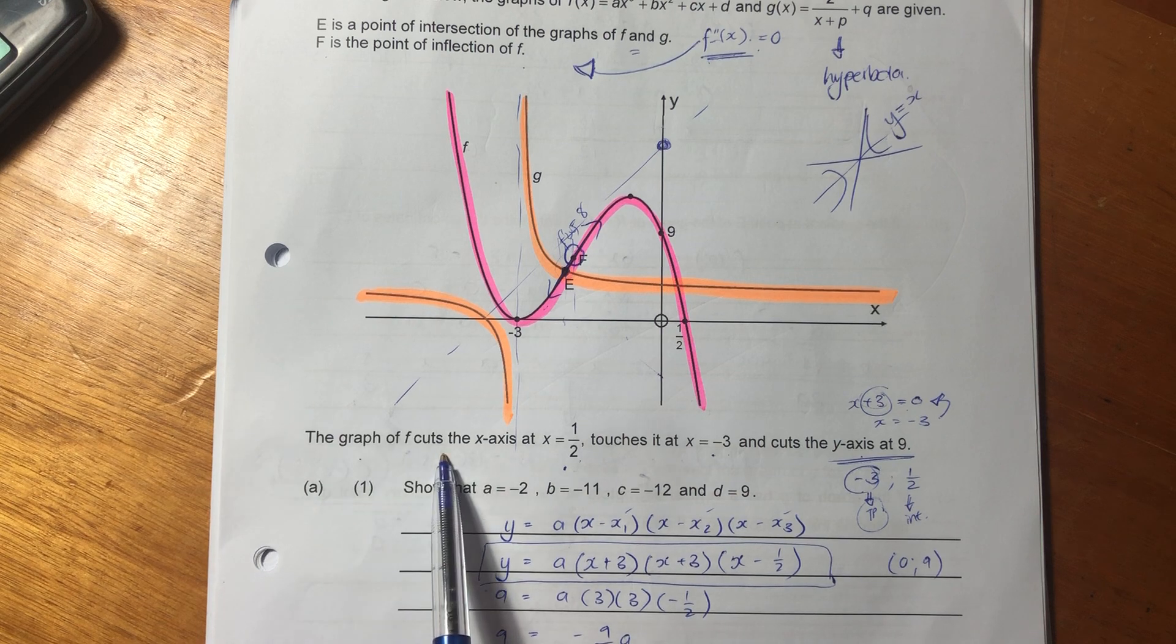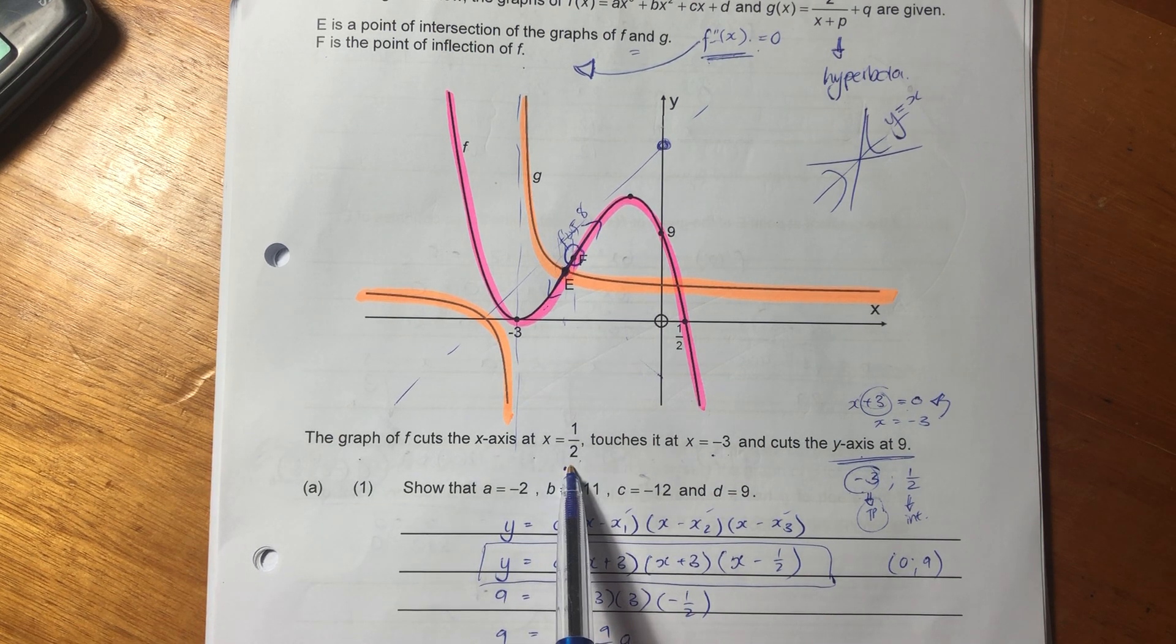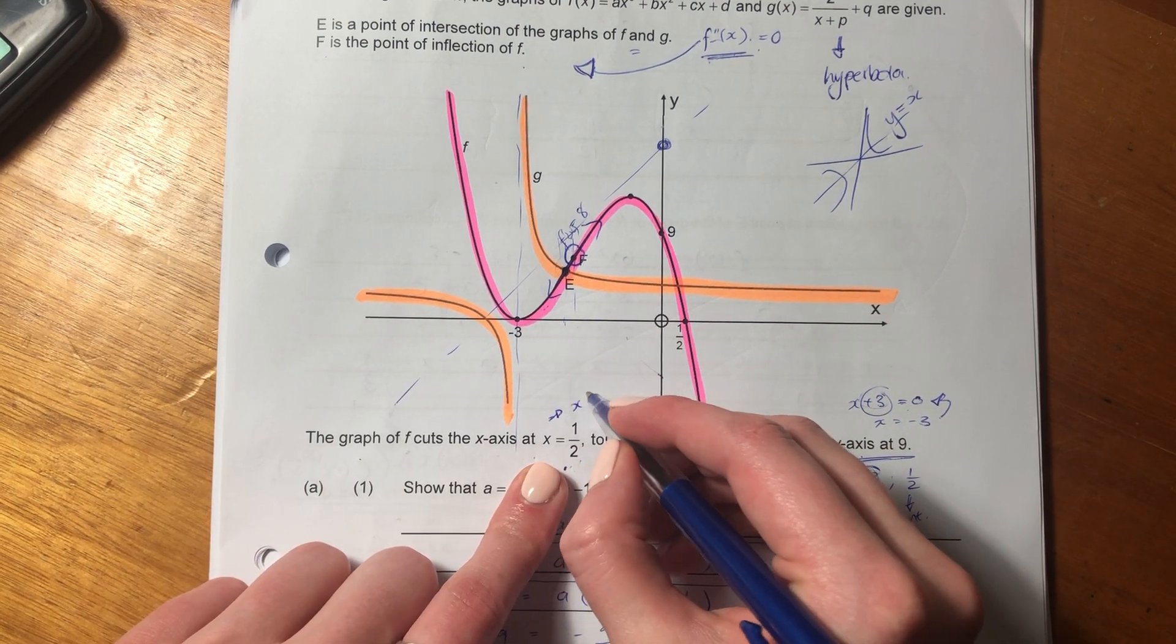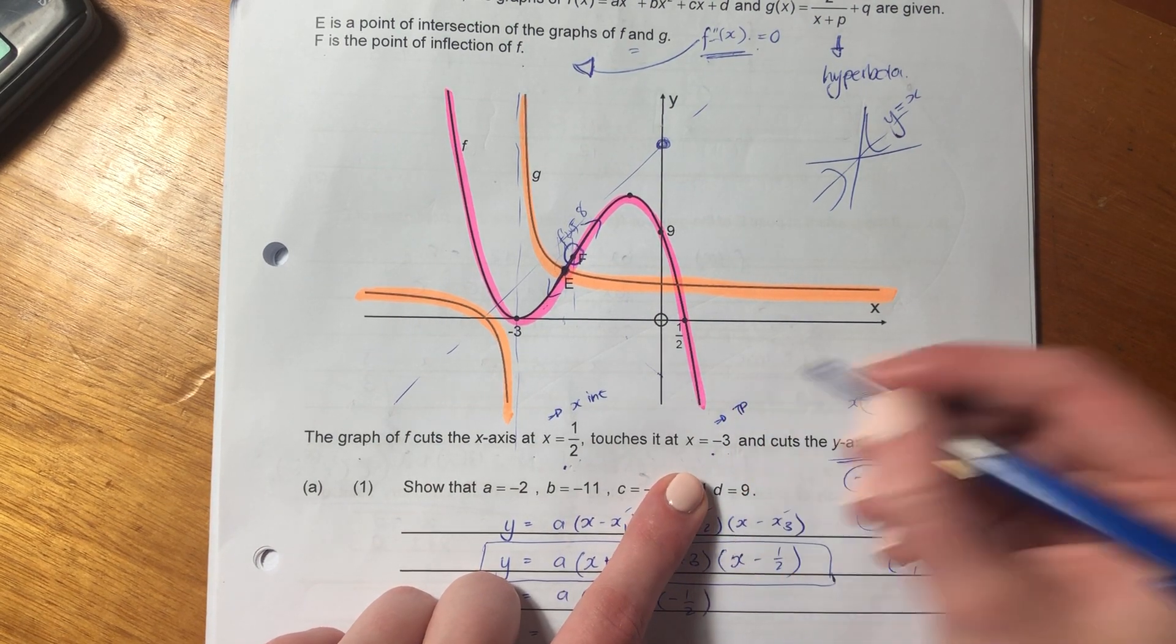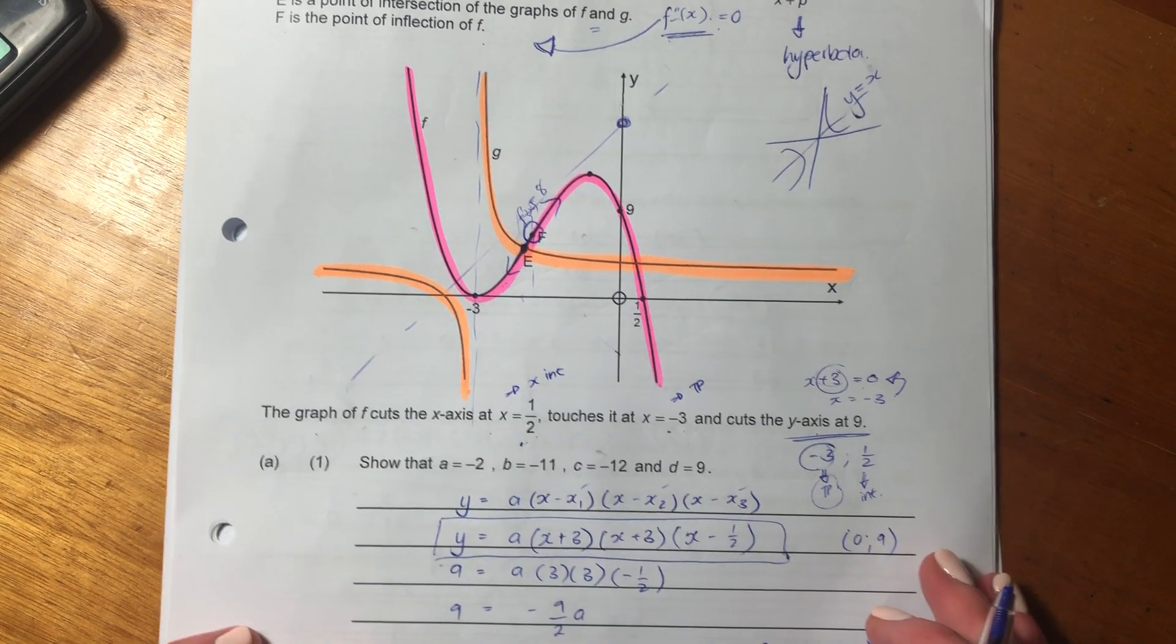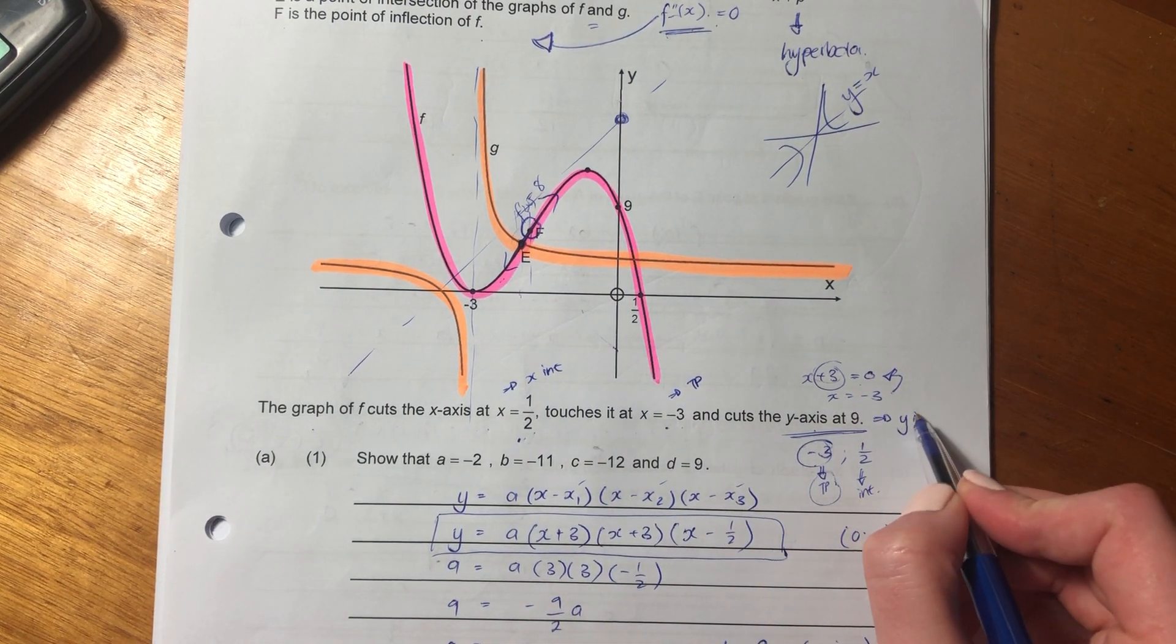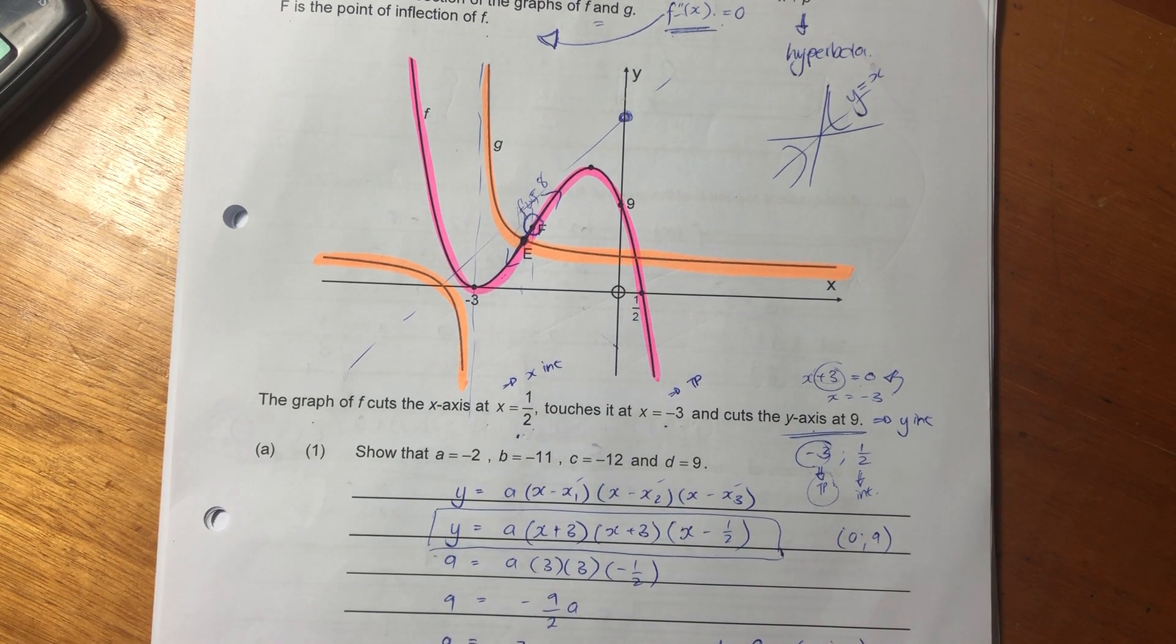So the graph of f cuts the x-axis at x = 1/2, that's an x-intercept. It touches at x = -3, that's a turning point or stationary point. And cuts the y-axis at 9, so that is a y-intercept. They've given us quite a lot of information there. They don't just give you information just because, they want you to leverage it.